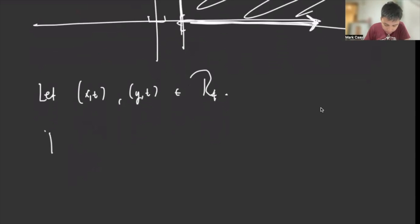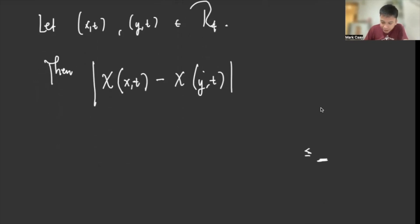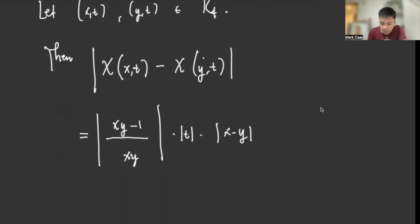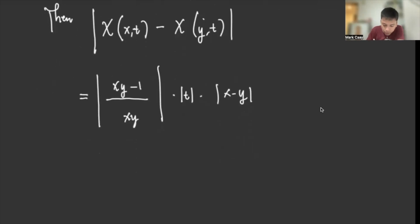We will have to let (x,t) and (y,t) be in R4. So ibig sabihin, we have to check because we need to satisfy that the ending should be less than any constant. So ||X(x,t) - X(y,t)||. We know for a fact given by this, this is equal to |(xy - 1)/(xy)| times t times |x - y|. So how do we work with this? This equals |1 - 1/(xy)| times t times |x - y|.